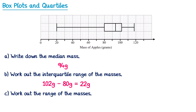You may even be asked to work out the range of the masses. The range is the greatest value subtract the lowest value. The greatest one is this value right at the end of the box plot, and the lowest value is the one at the other end. So we do the greatest take away the lowest: 118 subtract 20, and this gives you 98g.